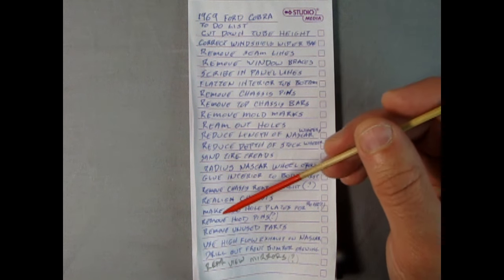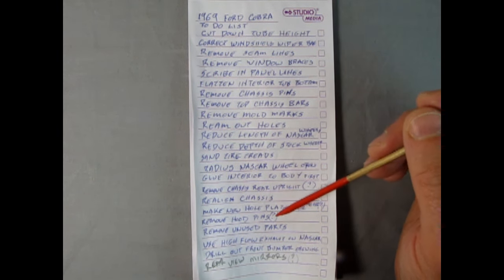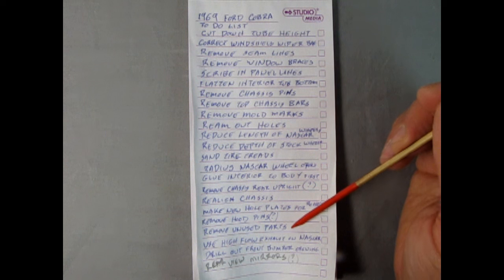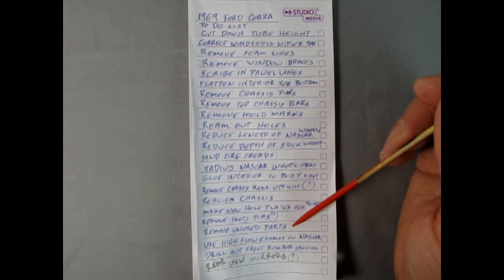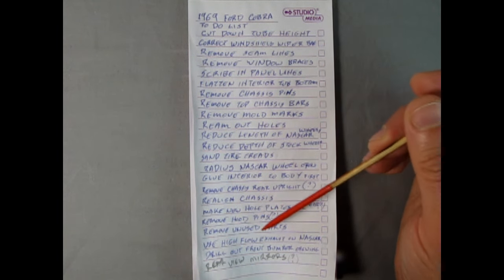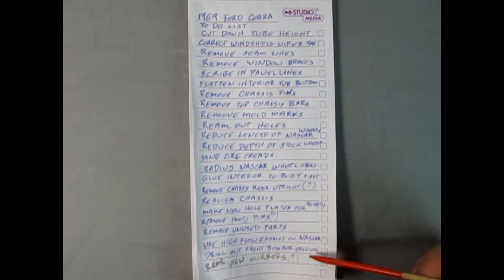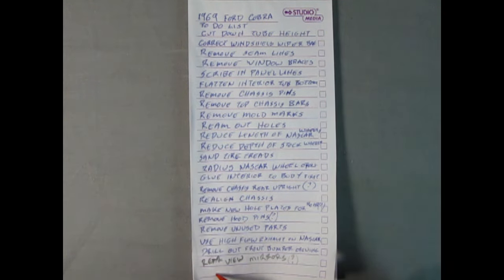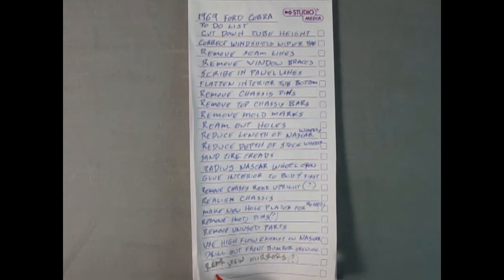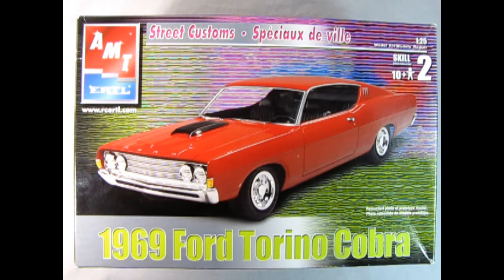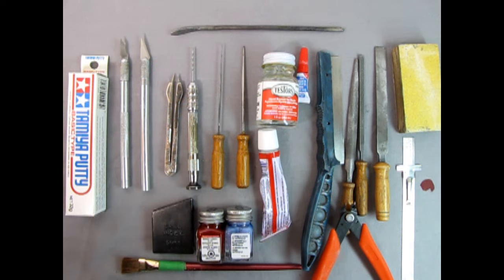Glue the interior to the body after you put the glass in, but before the chassis. Remove the chassis rear upright. I've got a question mark here because I'm not sure if we need to do that or not. Realign the chassis. Make new hole plates for the rear end. This is the thing I wanted to show you. Remove hood pins, that's only if you're building the Talladega. If you're building the Cobra or the NASCAR, you want to leave those on. Remove unused parts from the 68 kit or the stock car kit from 71. Use high flow exhausts on the NASCAR engine. Drill out the front bumper openings. And rear view mirrors, because this kit does not actually have any. Now with 23 items on the list, the real question is, where do we begin first?